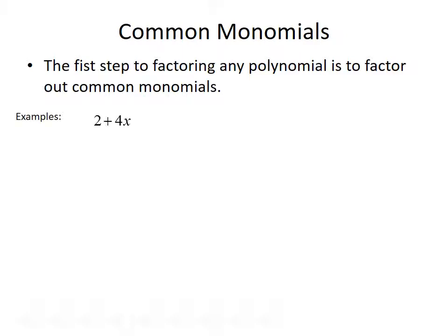We start with the polynomial 2 plus 4x, and we want to factor out a common monomial. What can we factor out from both 2 and 4x? We could factor a 2 out from both 2 and 4x, and so we could rewrite this as 2 times 1 plus 2x.